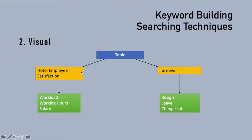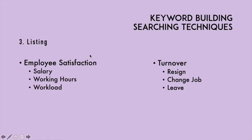Another strategy is visual — we make a diagram about keywords and try to put in words that have a connection to our keyword or factors. For example, factors affecting satisfaction could be workload, salary, or working hours. You can try putting each of these in the keyword search. And last but not least in the basic searching techniques is listing. Listing is another way of searching that is not much different from visual, only it is in the form of a list.